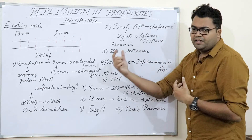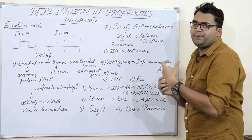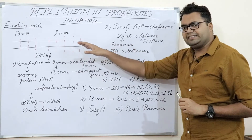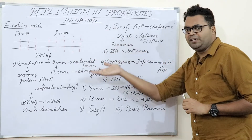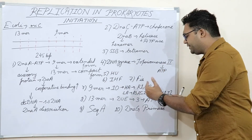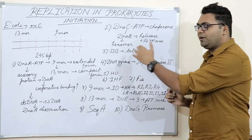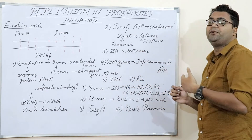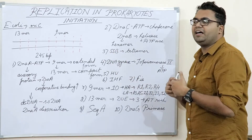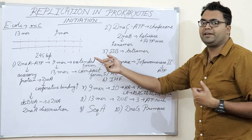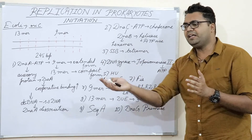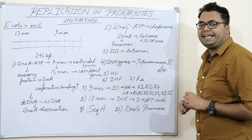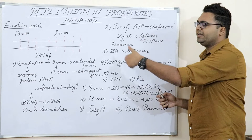FIS — factor for inversion stimulation — regulates DnaA activity in a very specific and intriguing way. Whenever the DnaA concentration is pretty low, FIS will not let the I sites be bound — it represses DnaA binding to the I sites. This prevents re-initiation or early initiation of DNA replication during the early phase of the cell cycle.